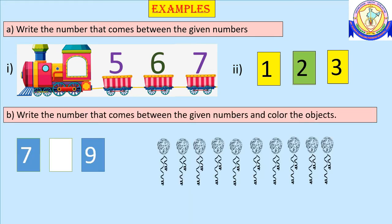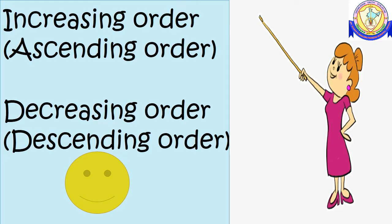Write the number that comes between the given numbers and color the objects. We can see the numbers seven and nine — thus we get eight in between seven and nine. Now we have to color eight balloons: one, two, three, four, five, six, seven, and eight.